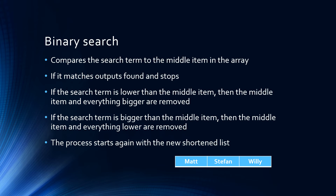We then repeat that process with our new shortened list until eventually we have a list of just one item. In this case we have a shortened list of Mat, Stefan, and Willy. We would now look at Stefan — that is not correct. Mat would come before it, so Stefan and Willy would be removed. Now we have a list of just one name, Mat, and we can say that it was found and stop our algorithm.